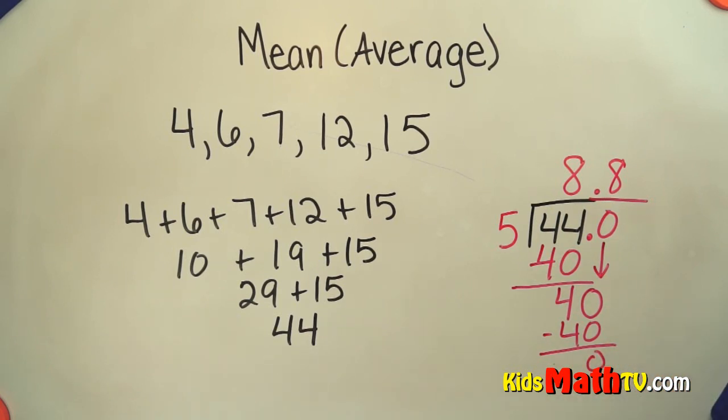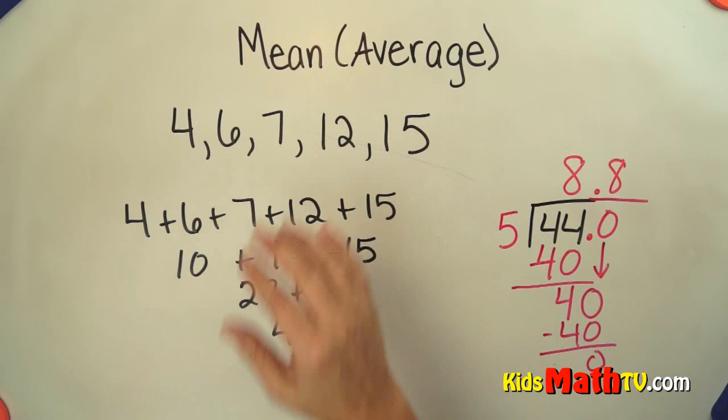So the average of all of these numbers is 8 and 8 tenths. 8 and 8 tenths is kind of in the middle of all of these numbers.